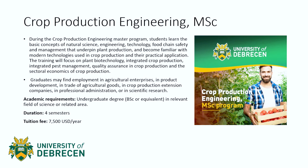The next program is crop production engineering. Students learn the basic concepts of natural science, engineering, technology, food chain safety, and management that underpin plant production, and become familiar with modern technologies used in crop production and their practical application. The training focuses on plant biotechnology, integrated crop production, integrated pest management, quality assurance in crop production, and the sectoral economics of crop production. After graduating, students may find employment in agriculture enterprises, product development, and trade of agricultural goods. Academic requirements are an undergraduate degree in a relevant field. The duration is four semesters, and the tuition fee is $7,500 US dollars per year.